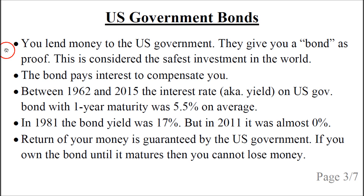So what is a US government bond? You lend money to the US government and they give you a bond as proof. This is considered the safest investment in the world. The bond pays interest to compensate you. Between 1962 and 2015, the interest rate, also known as the yield on the US government bonds with one-year maturity, was 5.5% on average.